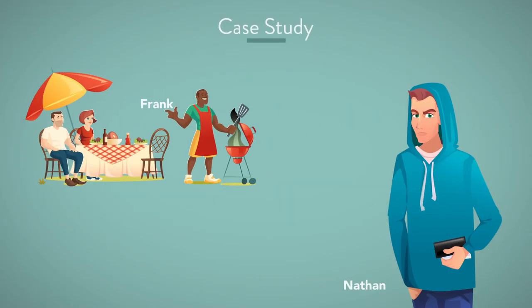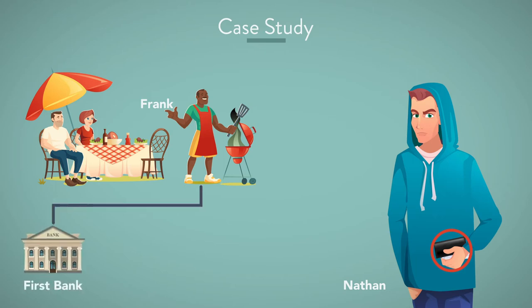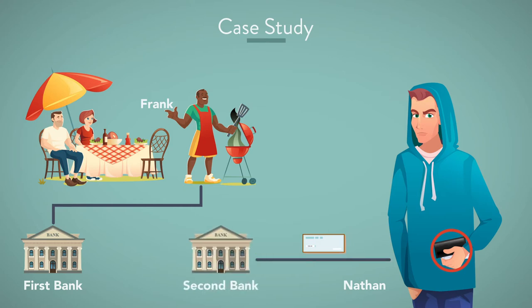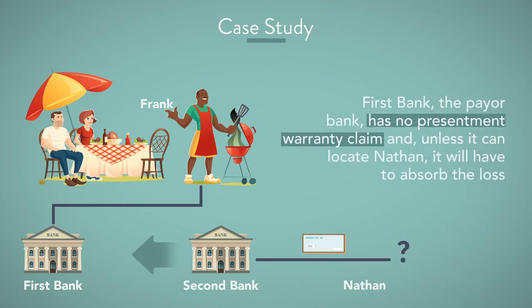For example: Nathan attends a party at Frank's house. While Frank is busy with other guests, Nathan steals one of Frank's checks. Frank's checking account is at First Bank. The next day, Nathan forges Frank's signature on one of his checks, enters an amount of $100, and cashes it at Second Bank. Second Bank presents the check to First Bank for payment. First Bank, the payer bank, has no presentment warranty claim, and unless it can locate Nathan, it will have to absorb the loss.